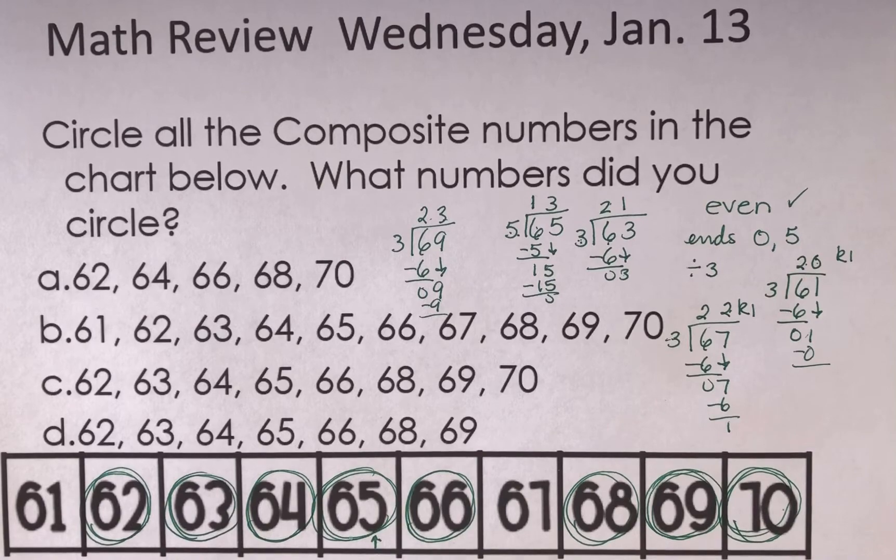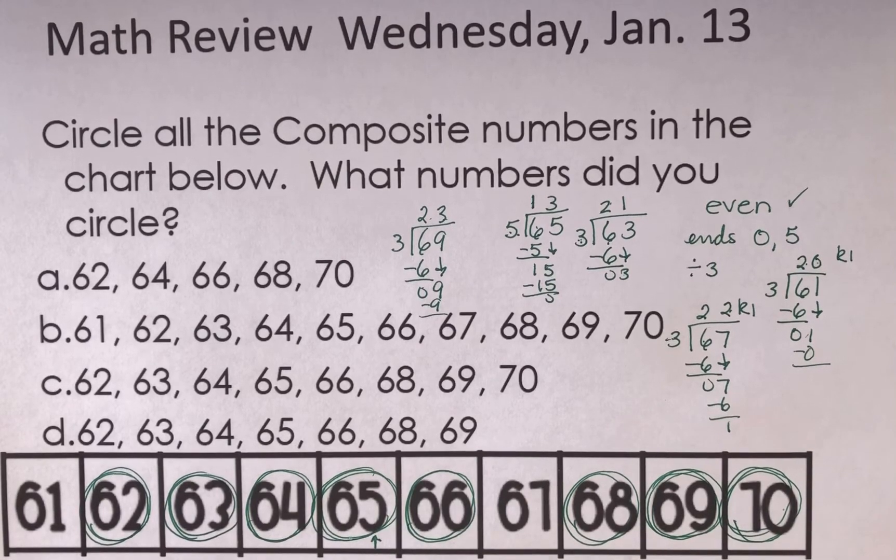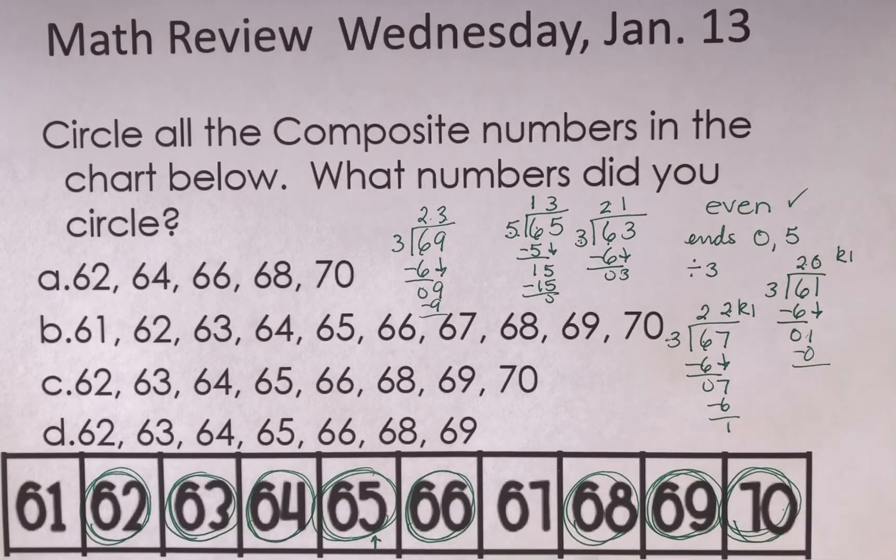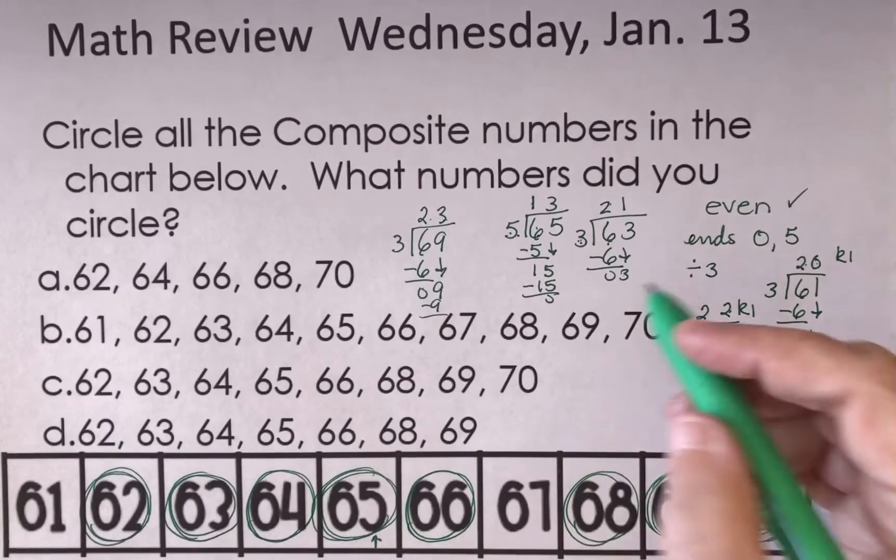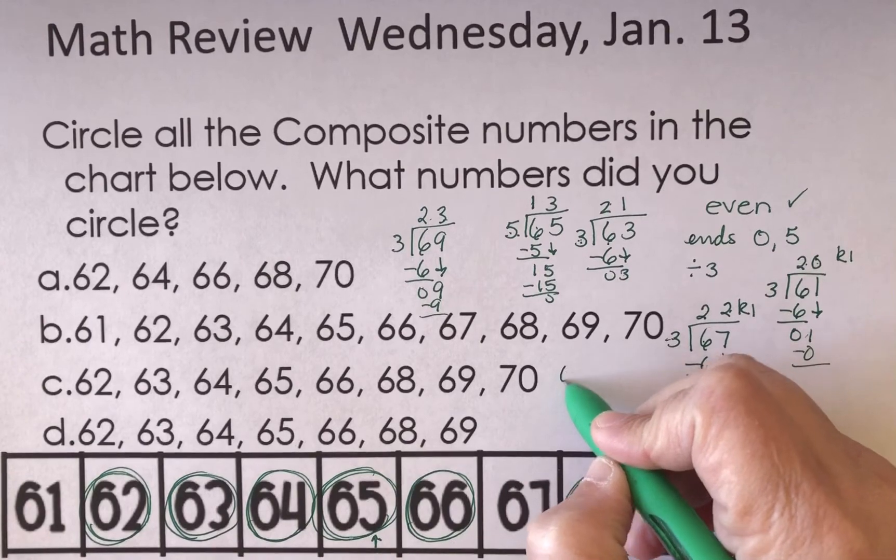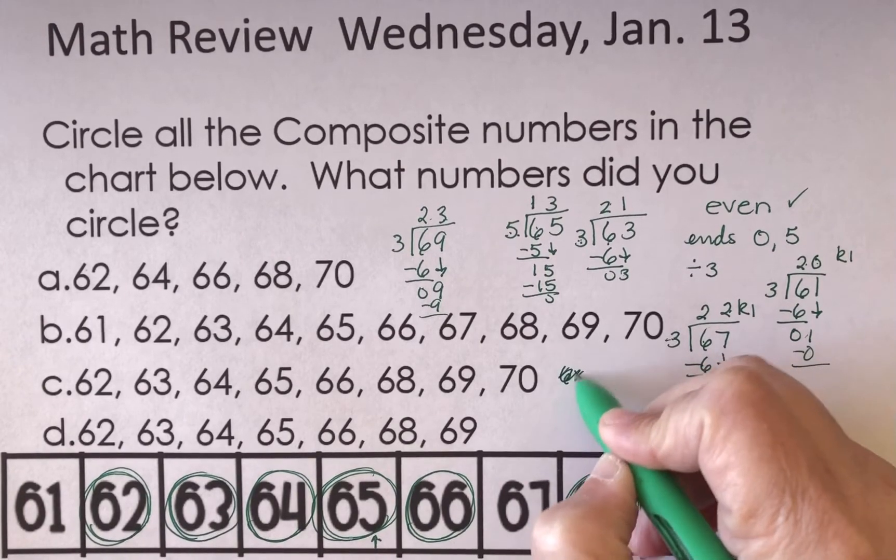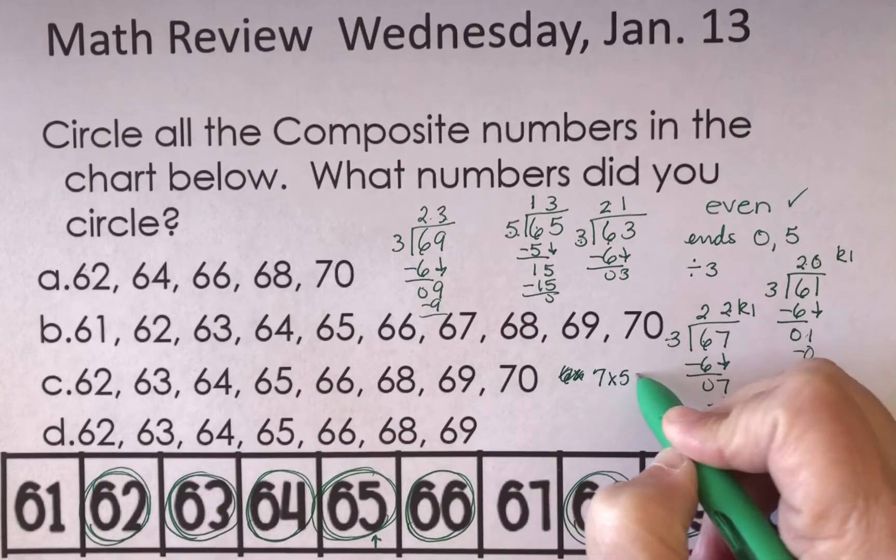The other numbers to try would be 7. So I can go through my multiplication facts with 7. I could also try 11. All right. If I go through my multiplication facts with 7, I'm going to start with 7 times 5.